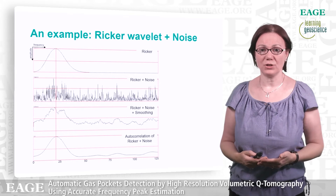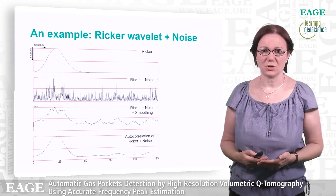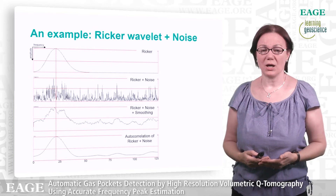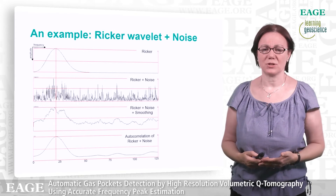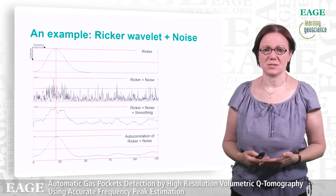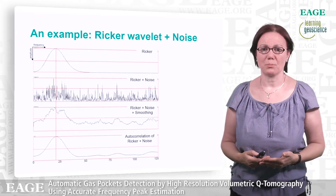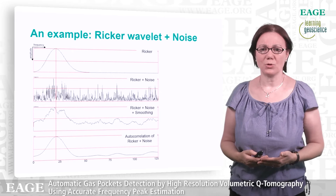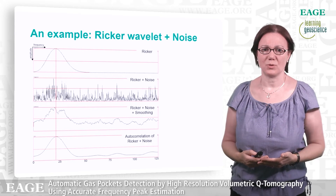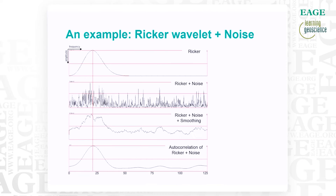This avoids including the side-lobes of the autocorrelation in the amplitude spectrum, allowing more accurate signal frequency peak estimation, and also makes the signal's amplitude spectrum more similar to the Ricker wavelet, as you can see on the bottom side compared to the reference on top.